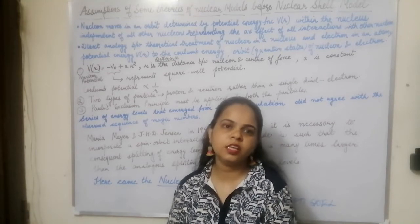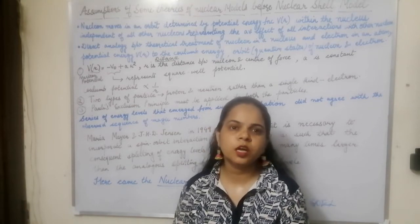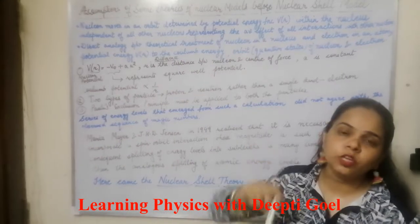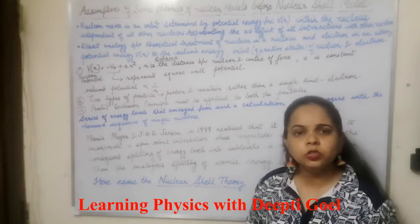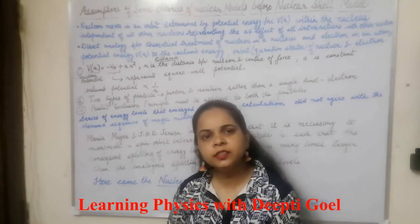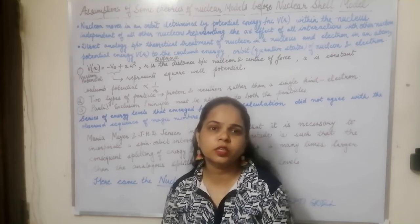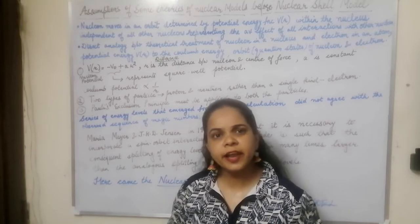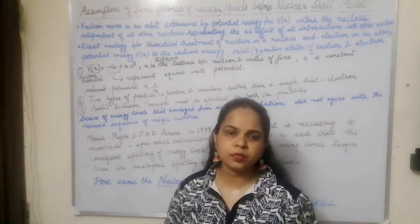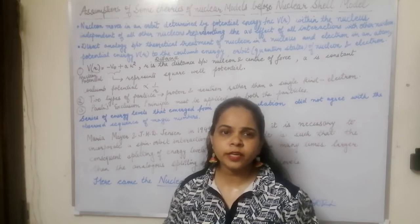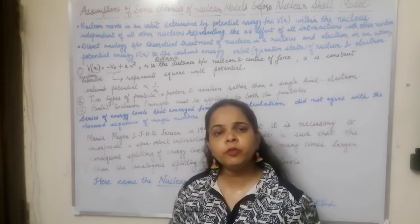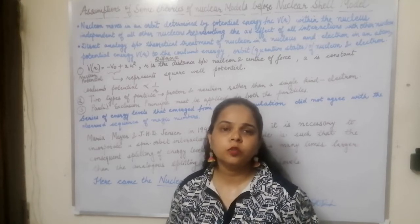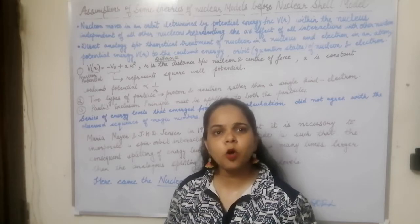Now we are going to discuss the assumptions that were proposed for the nuclear models before the theory suggested by the nuclear shell model. The theory proposed said that the nucleons are inside the nucleus and would be moving inside the nucleus just as the electron moves inside the atom. Since electrons revolve around the nucleus in particular orbits, in the same fashion the nucleons are also revolving inside the nucleus in specific orbits.